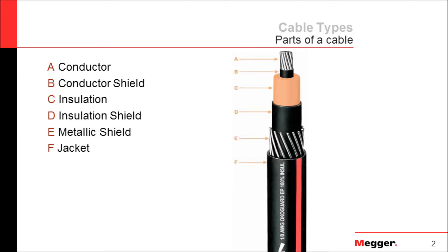I'm going to go over the parts of the cable. I know many of you are already familiar with the makeup, but I just want to establish some sort of baseline, because there are various names for the components. Starting from the top, we have the conductor. It is made out of either copper or aluminum, and it is usually solid or stranded.